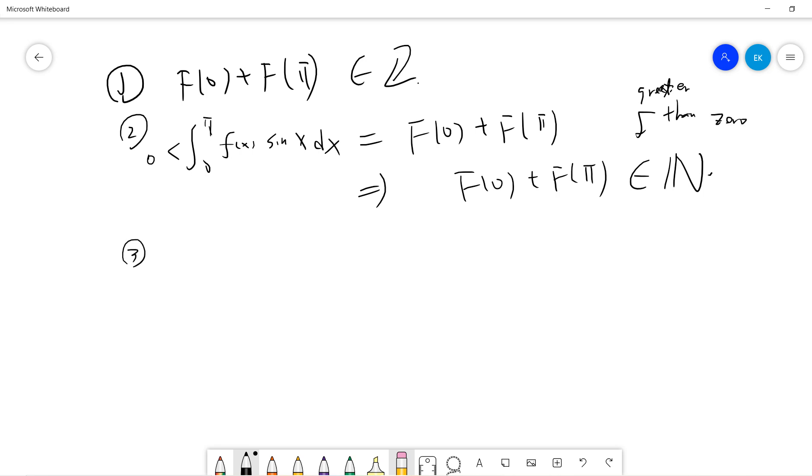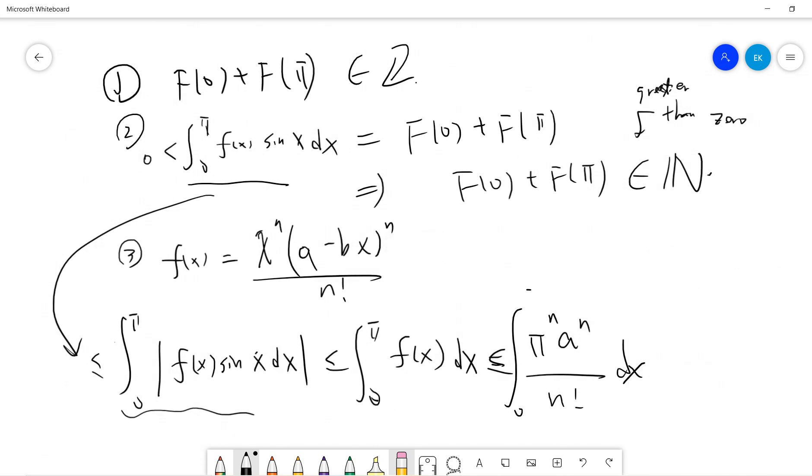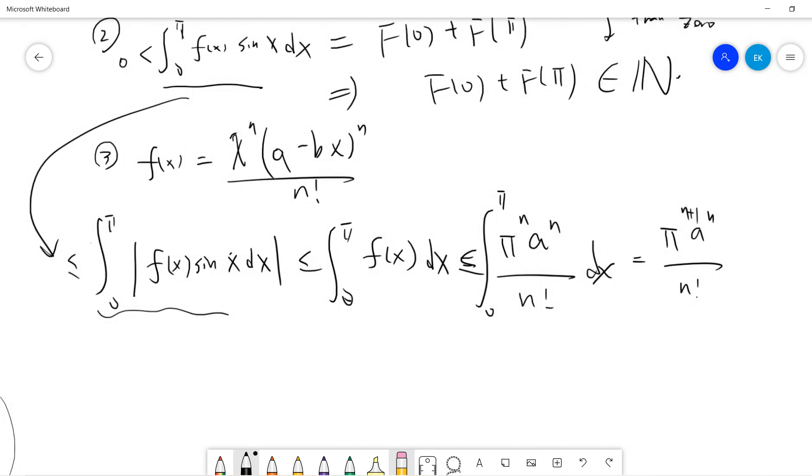But what we have is the integral of x^n(a - bx)^n over n factorial. If we do the error analysis, this integral will be less than the integral where I bound sine by 1. And f was already positive. From 0 to π, x^n must be less than π^n. So I get π^(n+1) times a^n over n factorial. So now everything becomes trouble, because this is F(0) plus F(π).